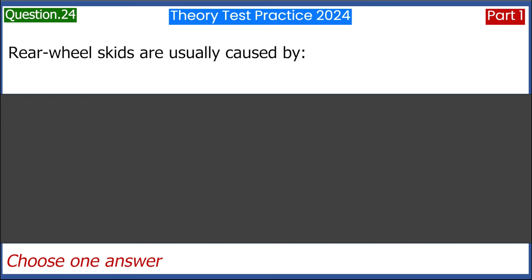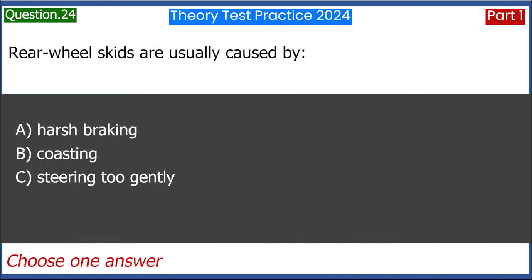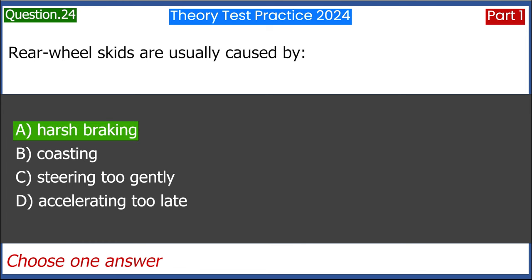Rear wheel skids are usually caused by: A. Harsh braking. B. Coasting. C. Steering too gently. D. Accelerating too late. Answer: A. Harsh braking.